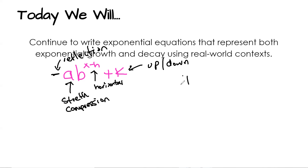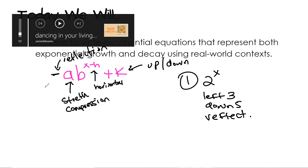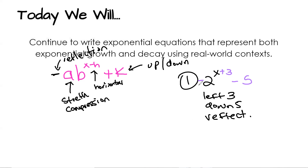So if I told you the parent function is 2 to the x, and I want you to move it left 3, down 5, and reflect — what is that equation going to look like? Moving left 3 means plus 3 in the exponent. Down 5 means minus 5. A reflection means a negative out front.